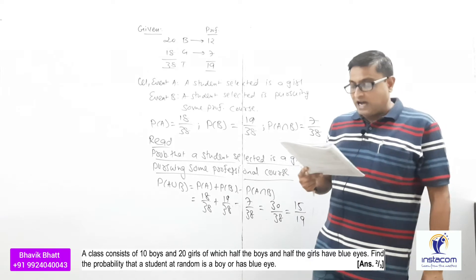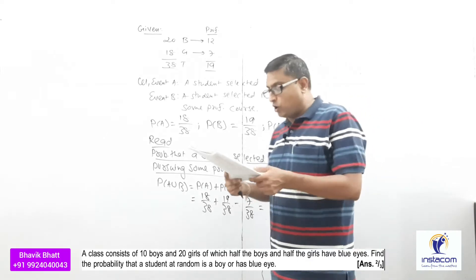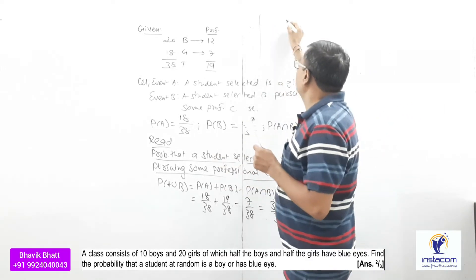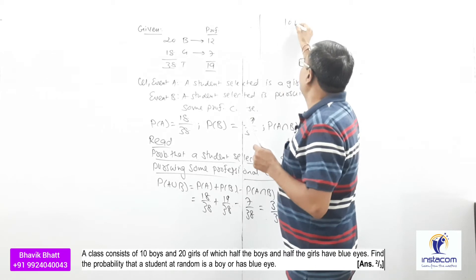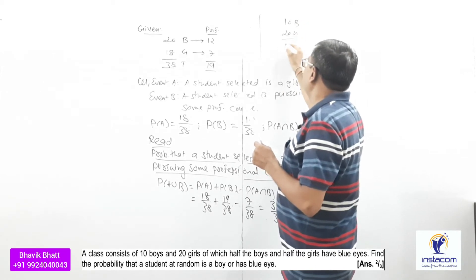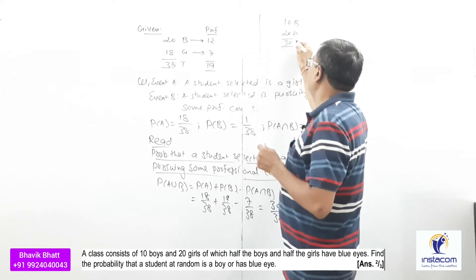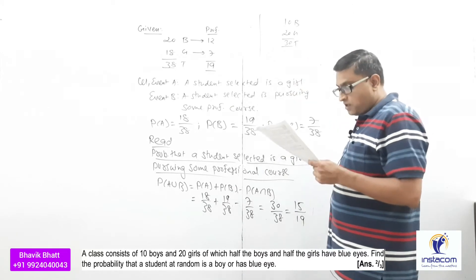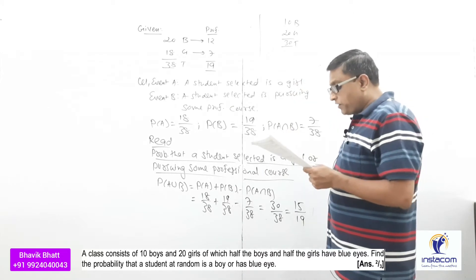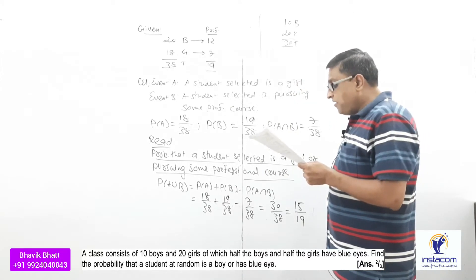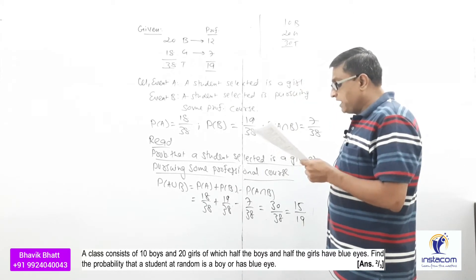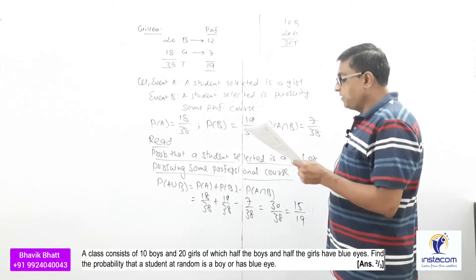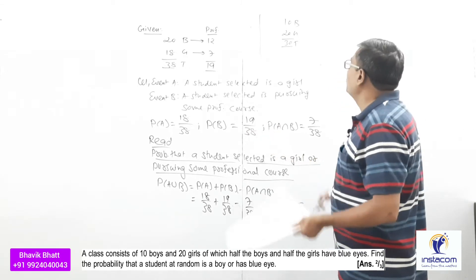Next question: a class consists of 10 boys and 20 girls, meaning a total of 30 students. Half the boys and half the girls have blue eyes — so half of 10 is 5 boys with blue eyes, and half of 20 is 10 girls with blue eyes.